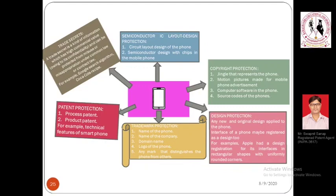The last and most important type of IPR eligible for mobile phones is patent. Patents for mobile phones can be of two types: product patent, where the product itself is unique and distinguishable, solving a particular problem; and process patent, which is allocated to a process followed by a phone to perform a particular function. Thus, a product can have multiple types of IPR, and specifically regarding patents, it can be both a product patent and a process patent.